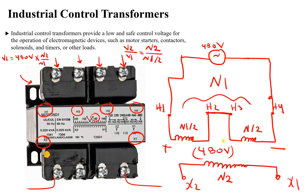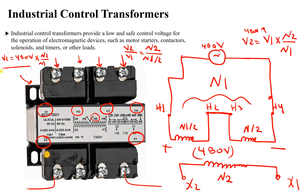Looking at the secondary voltage V2: V1 is 480 volts, multiplied by the number of turns of the secondary N2, divided by the total number of turns of the primary, which is N1. So V2 = 480 × N2/N1 — exactly the same result as in the first case.